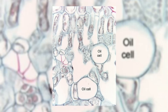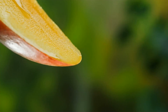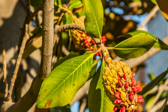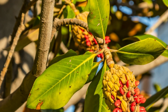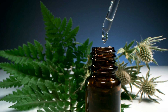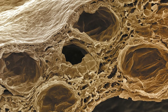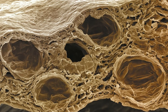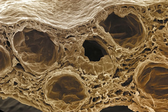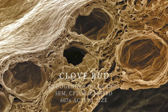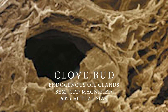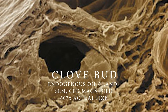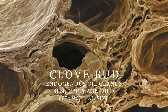A common feature in living cells is secretion — the discharge of substances to the exterior. They have inner cellular cavities that may contain salt, latex, waxes, or essential oils. This next picture looks almost like a loofah plant, but it is actually clove bud, showing endogenous oil glands magnified 607 times its actual size.